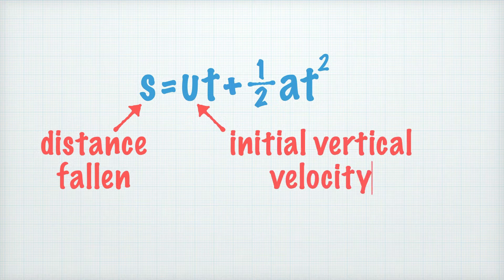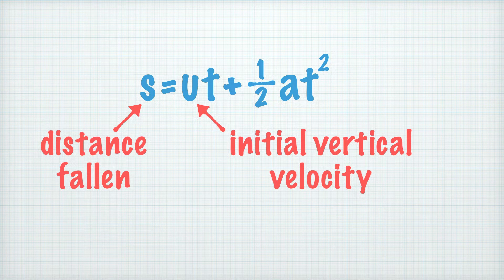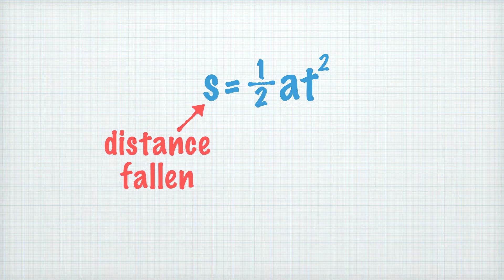u is the initial vertical velocity of the rod just before it's dropped. Because u is equal to zero, we can get rid of this part of the equation which makes it a little bit easier.